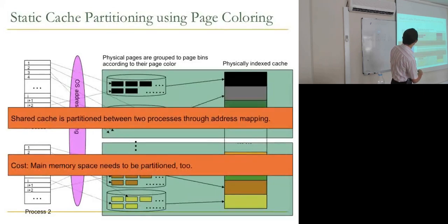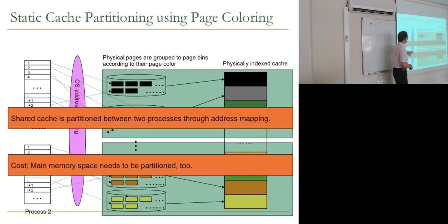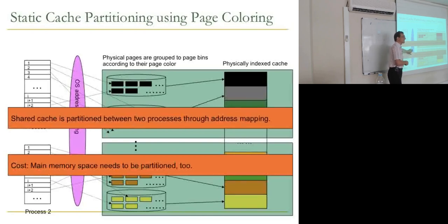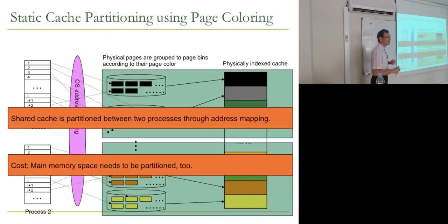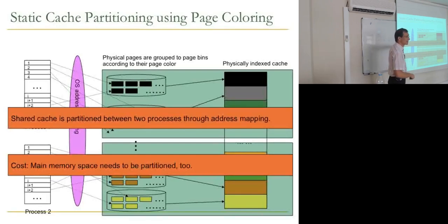The downside is that main memory space needs to be partitioned too, which is actually a significant downside. You could potentially get rid of this with an additional level of indirection decoupling the cache address mapping from main memory, but that doesn't exist in today's systems.